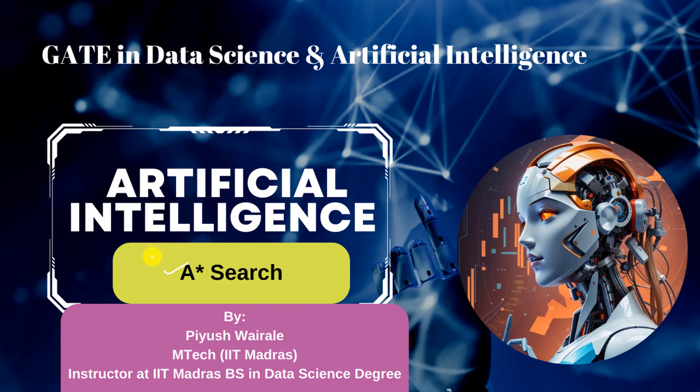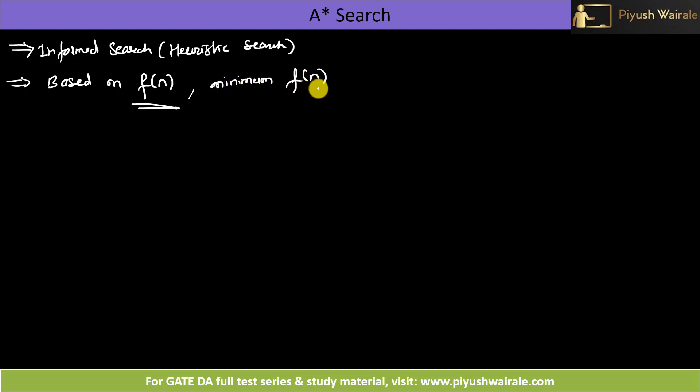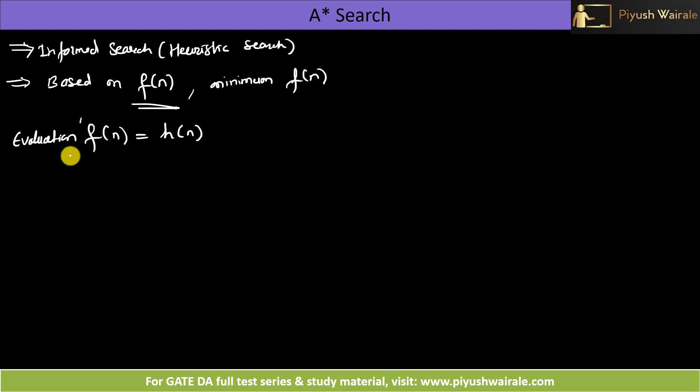If you remember from the last video, informed search is also known as heuristic search. Based on the evaluation function value — that is f(n) — we explore the next node. We take the minimum f(n) value of a particular node and explore that node first. So what is this evaluation function f(n)? In the case of greedy best-first search, f(n) equals h(n), the heuristic function.